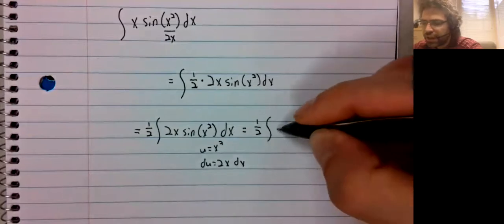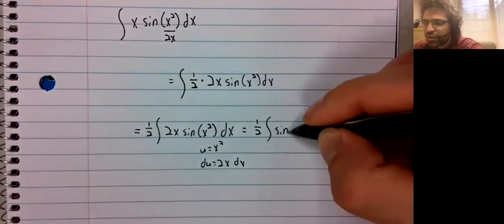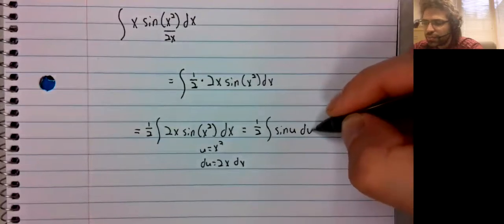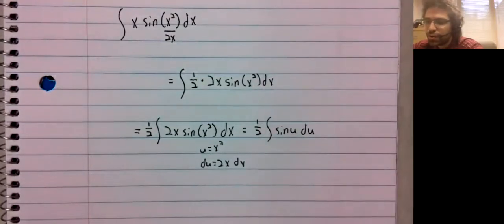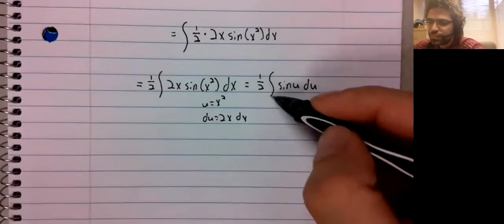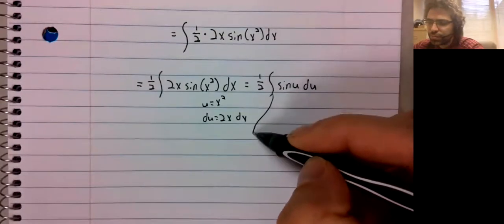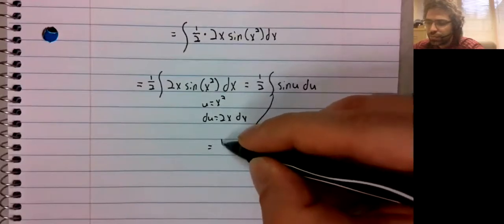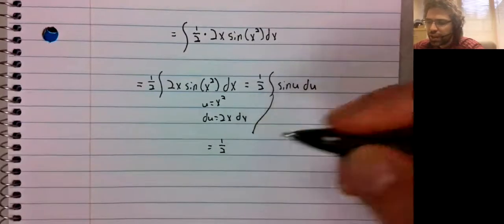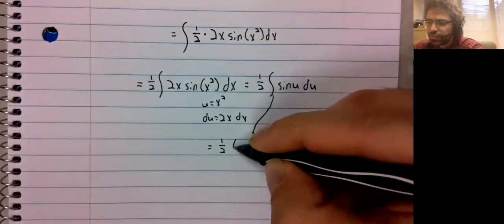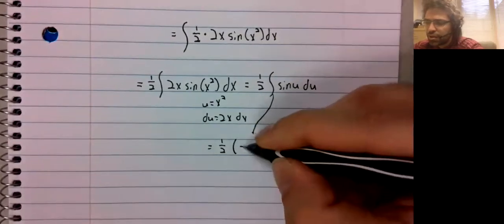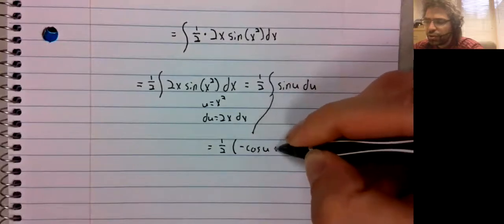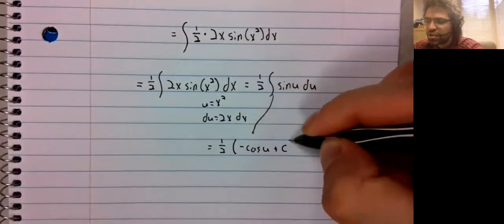One half the integral of sine U dU equals one half the negative cosine of U plus C.